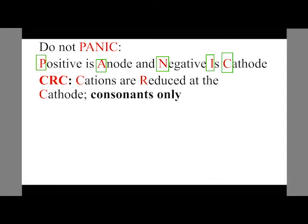And here we have another mnemonic to help us remember what happens at each electrode. We have CRC and that is to mean that we have consonants only. We have C, which stands for cations, and R standing for reduced, and C again for cathode. So the cations are reduced at the cathode.